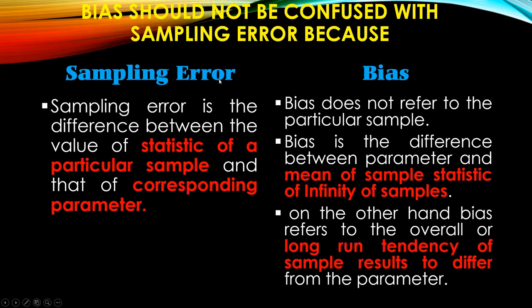What is sampling error? Sampling error is the difference between the value of a statistic of a particular sample and the corresponding parameter. For example, suppose we have a population of 100 units and we draw a single sample of 10 units from this population.